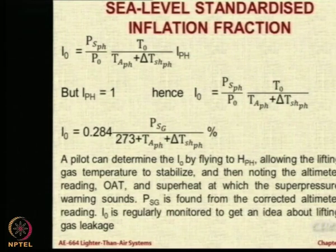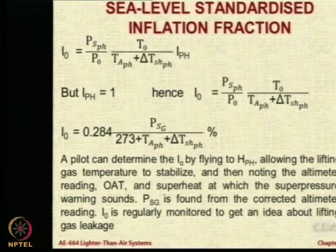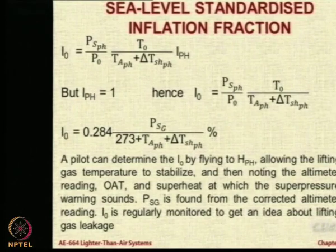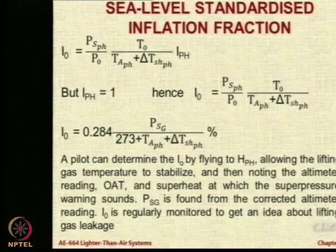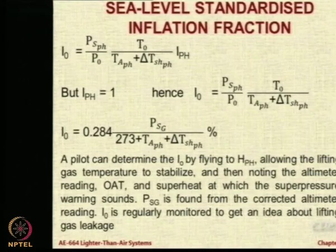Let us say you inflate every time with a given inflation fraction — say 90% — and then you fly to the pressure altitude, flying steadily to allow the temperature to stabilize, and find out at what height you are reaching. If conditions are ideal and there is no gas leakage, no problem in the system, then with a given inflation fraction and allowing the gas to stabilize, you will reach a pressure altitude of, say, 1500 meters. But over a period of 3–4 months, some gas will leak.